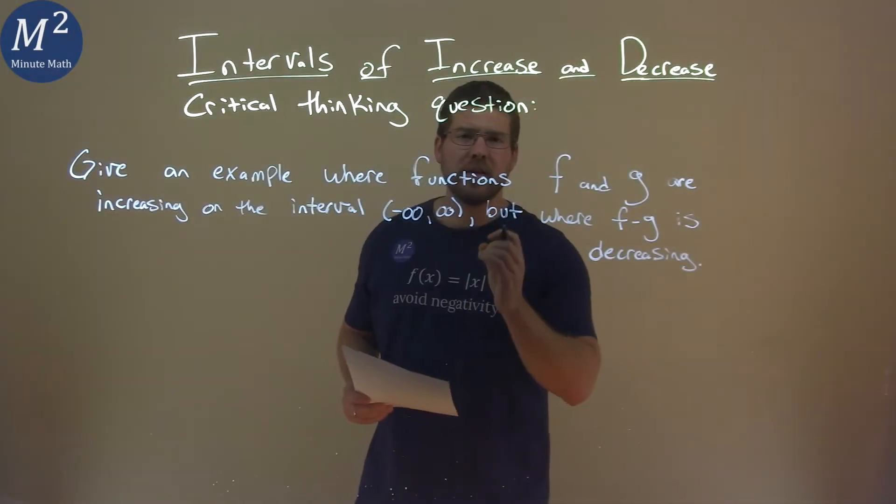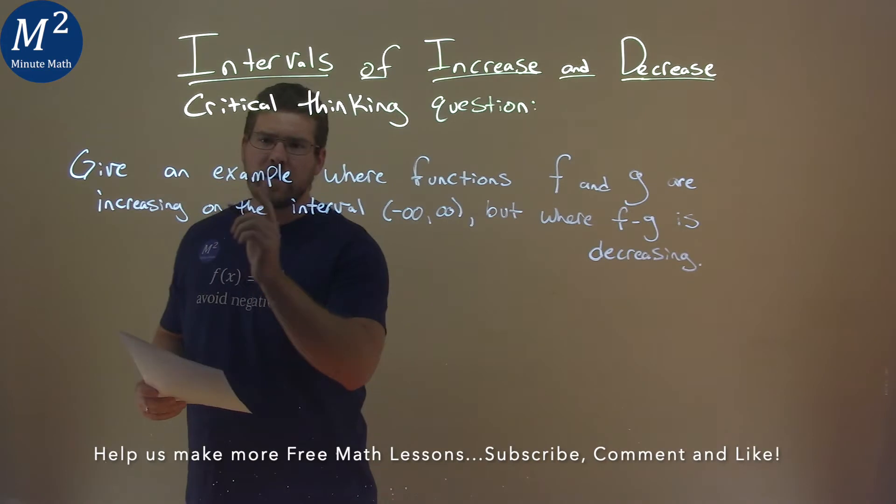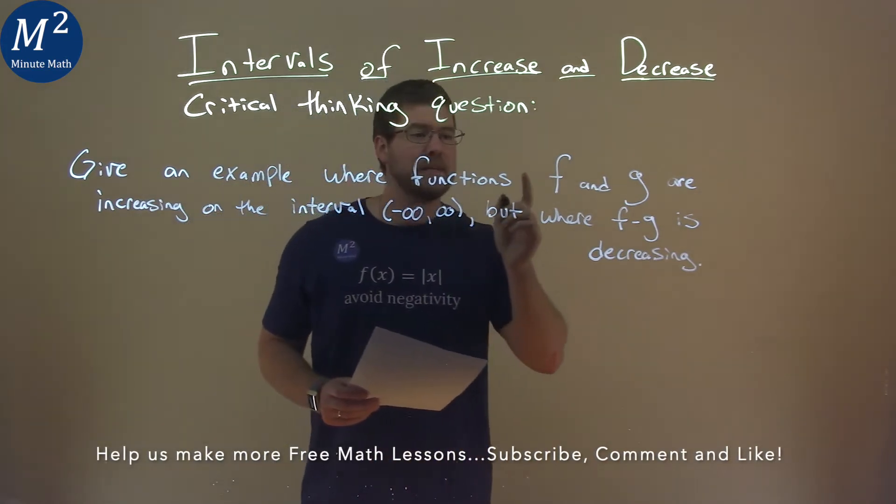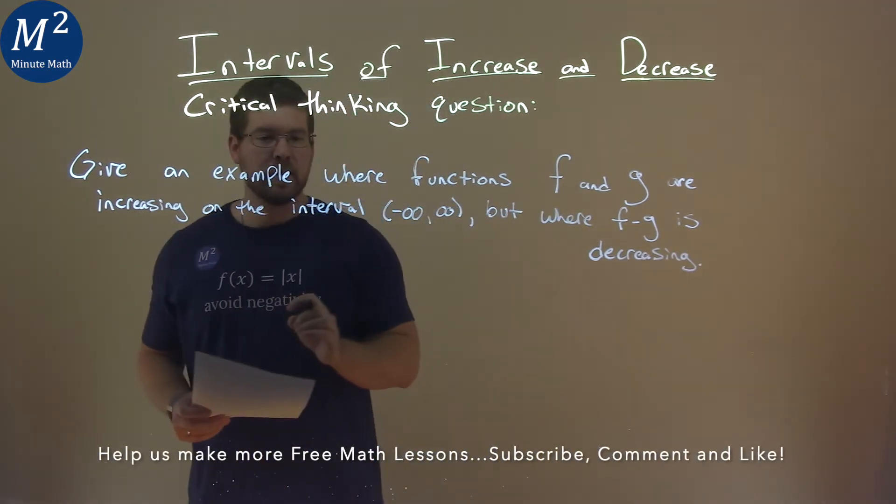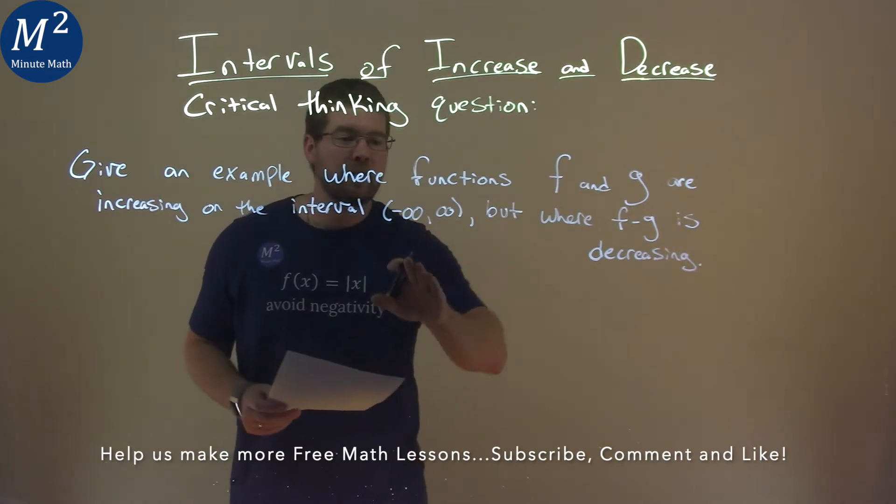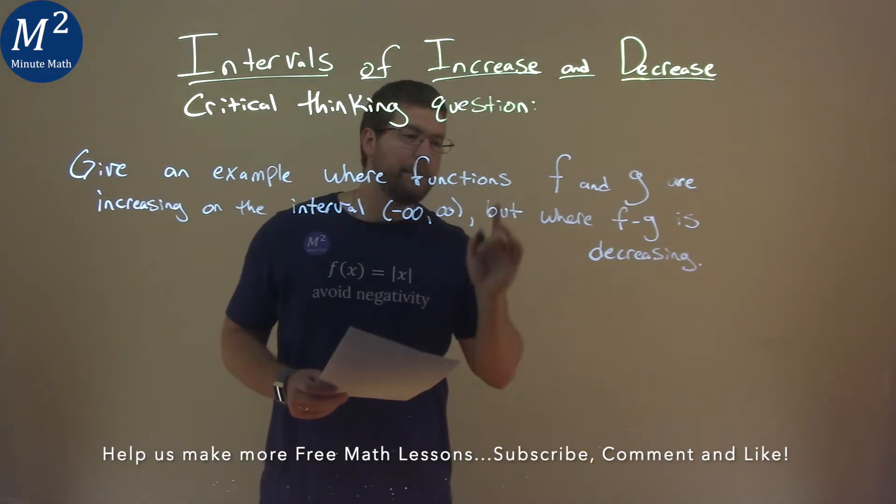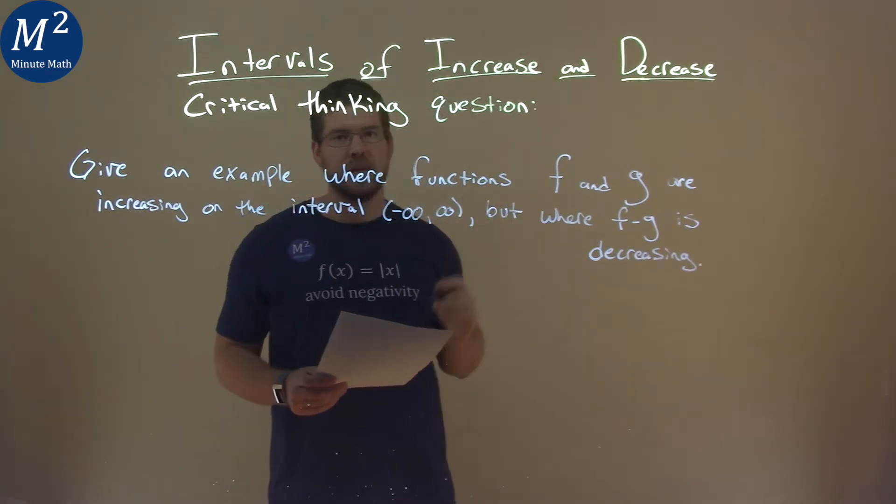We're given this critical thinking question. Give an example where functions f and g are increasing on the interval from negative infinity to positive infinity, but where f minus g is decreasing.